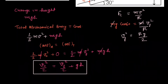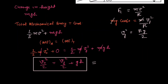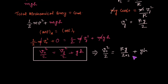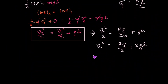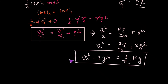Substituting Vy² = Rg/2 into the energy conservation equation V0²/2 = Vy²/2 + gH gives: V0²/2 = (Rg/2)/2 + gH. Multiplying through by 2: V0² = Rg/2 + 2gH. Rearranging: V0² − 2gH = Rg/2, which is exactly option A. So option A is correct.